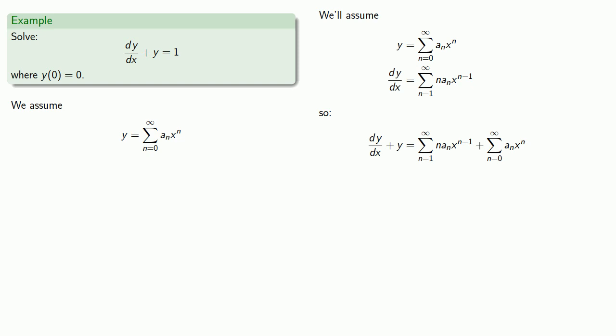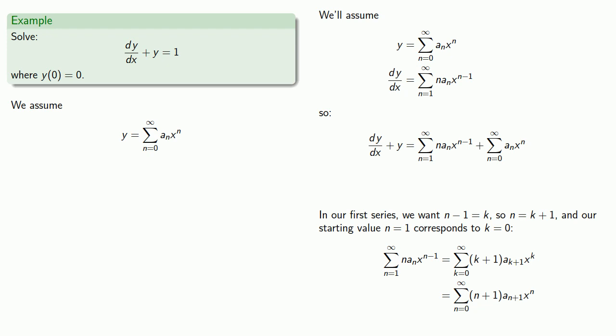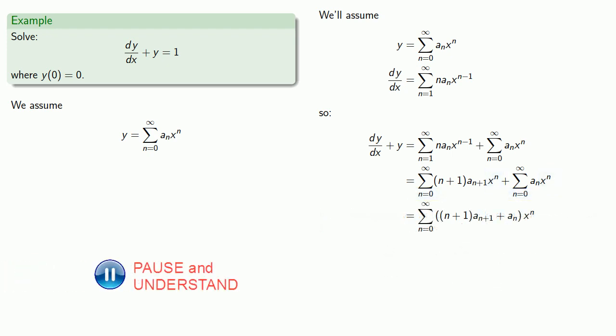So we want n minus 1 to be equal to k, and so n is equal to k plus 1. Our starting value n equals 1 corresponds to k equals 0, and so our series becomes... And since the name of the index variable doesn't matter, we'll call it n and get our series. Now our two series have the same power on x. They both start at n equals 0, and so we can combine the coefficients.